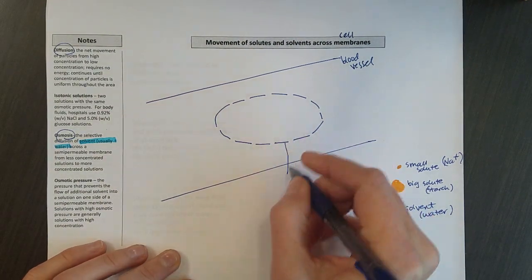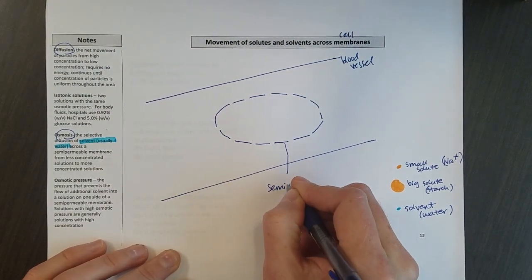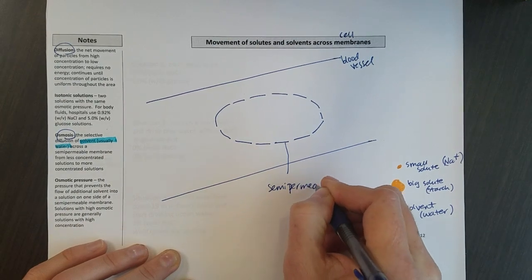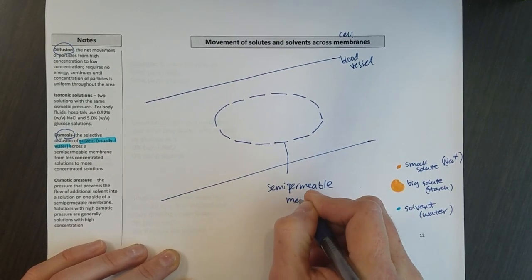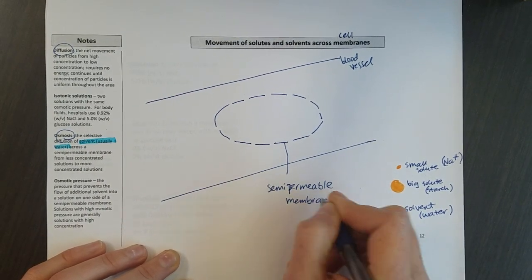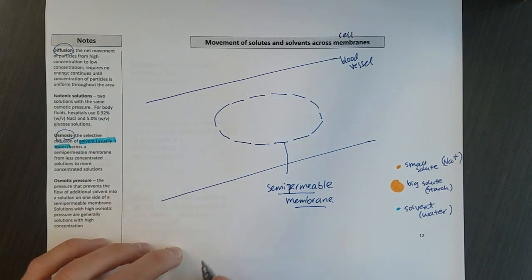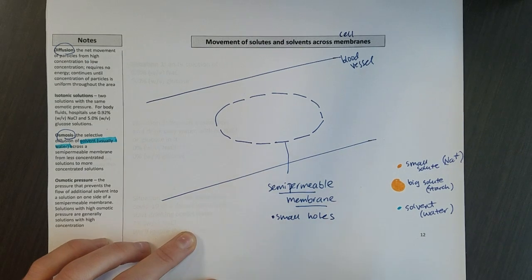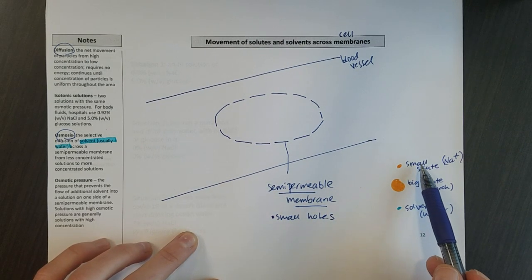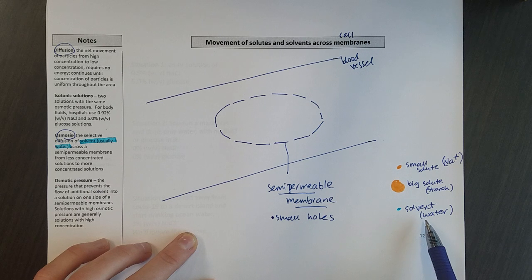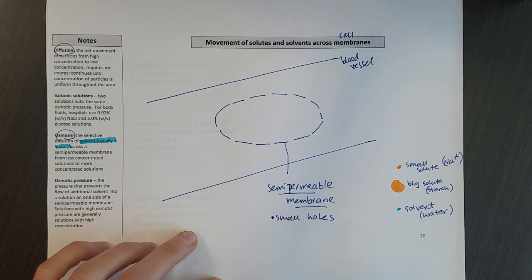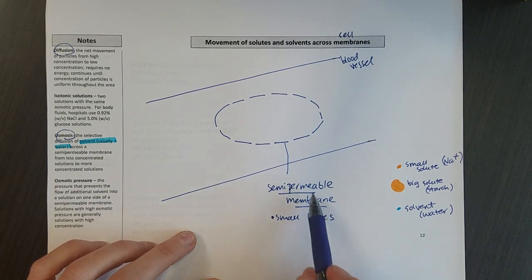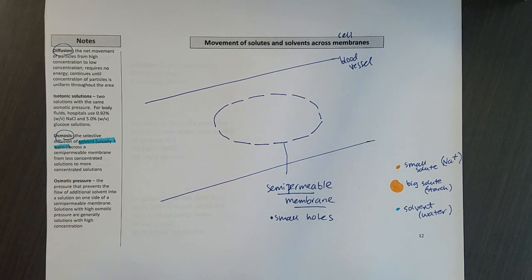This semi-permeable membrane, semi meaning kind of or partially, has small holes in it. And if you look over here, you can see that small solutes and water would be able to move in and out of those. And the big solutes would not. So it's only permeable to small things.